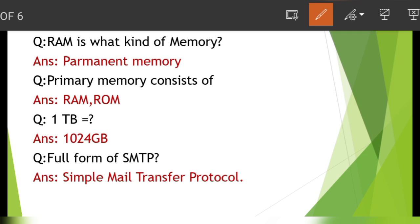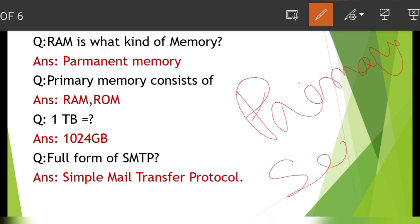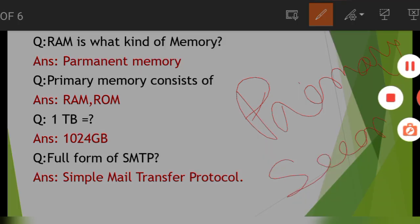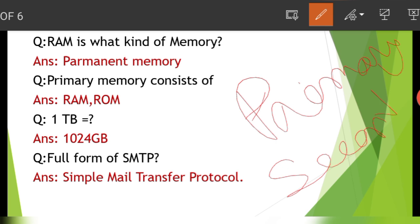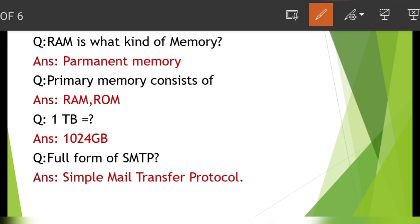Next question: primary memory consists of RAM and ROM. Secondary memory includes CPU, hard disk, and pen drive.